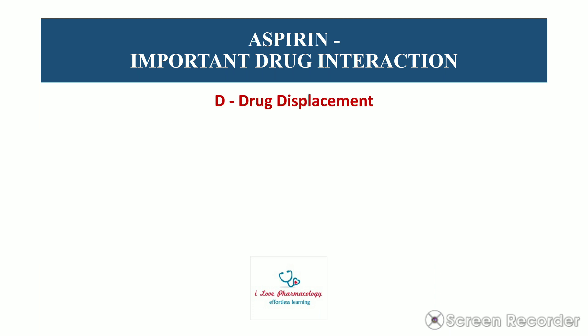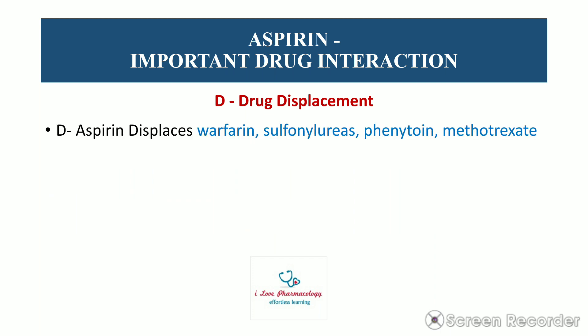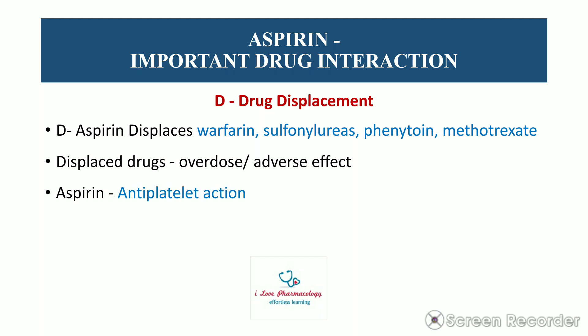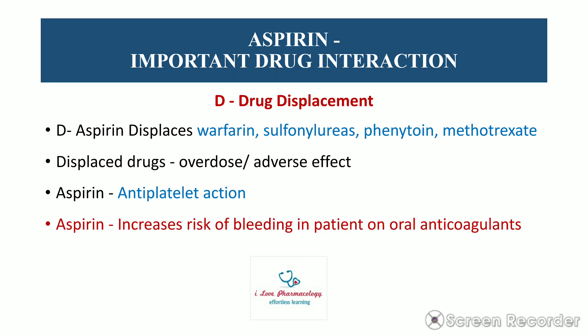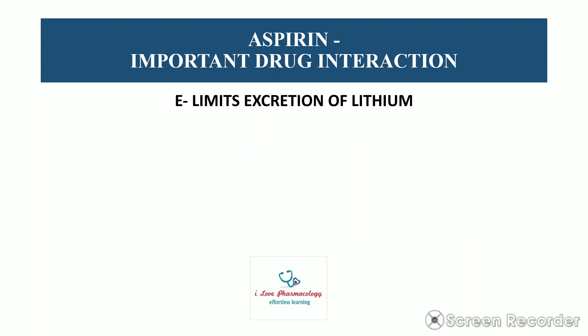The fourth drug interaction: Aspirin Displaces warfarin, sulfonylureas (hypoglycemic agents), phenytoin, and methotrexate from plasma protein binding sites, because aspirin has high plasma protein binding capacity. This displacement leads to overdose or adverse effects of these drugs due to increased free concentration. Additionally, at low doses aspirin has antiplatelet action by inhibiting thromboxane A2 synthesis, so together these can significantly increase the risk of bleeding in patients on oral anticoagulants.